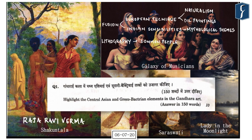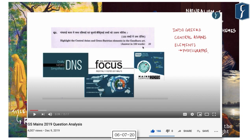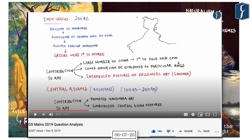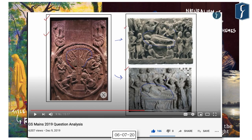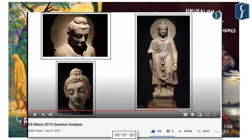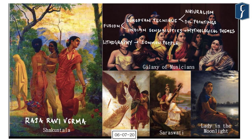We have discussed this question in our series of videos, demonstrating the Indo-Greek features in Indian art by visualizing images from various museums across the world to show which features were Greco-Roman and Bactrian. Similarly, UPSC can ask us to delineate the European and Indian elements in the art of Raja Ravi Varma.